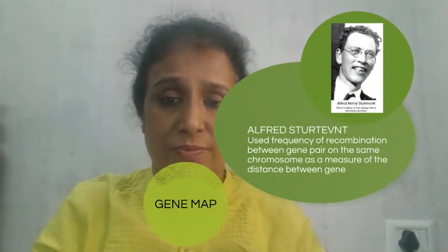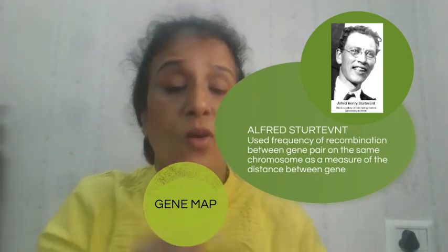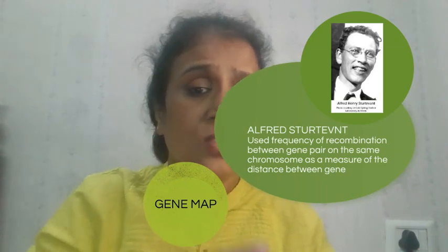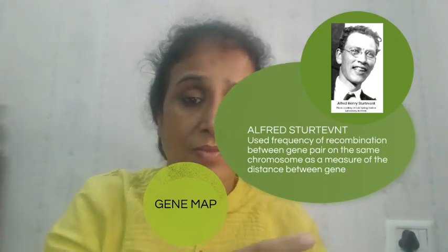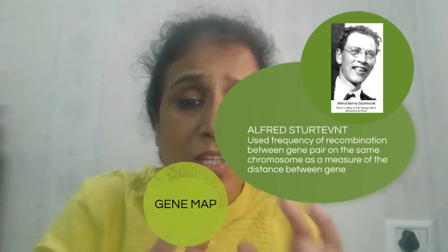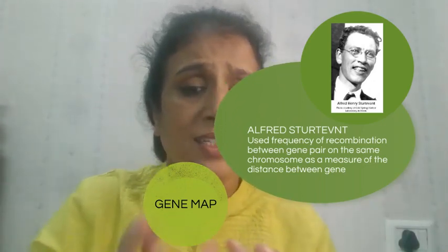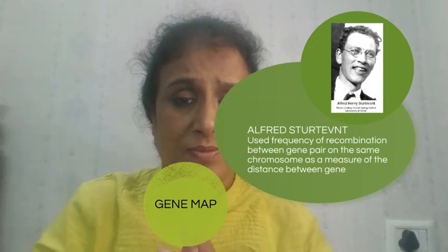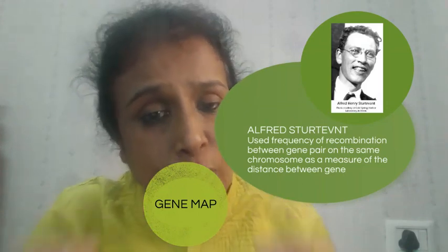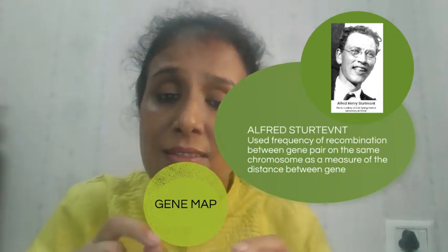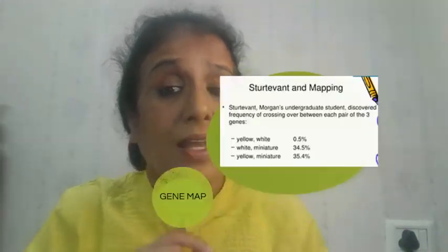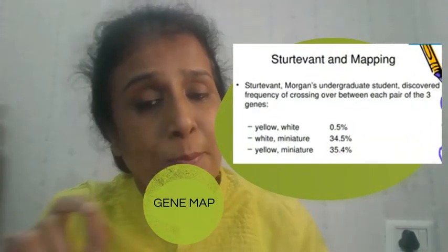This result of Morgan's experiment was used by his student Alfred Sturtevant. On the basis of the frequency of recombination between gene pairs when they are present on the same chromosome, we can calculate the exact distance between the genes — and that he called gene mapping.